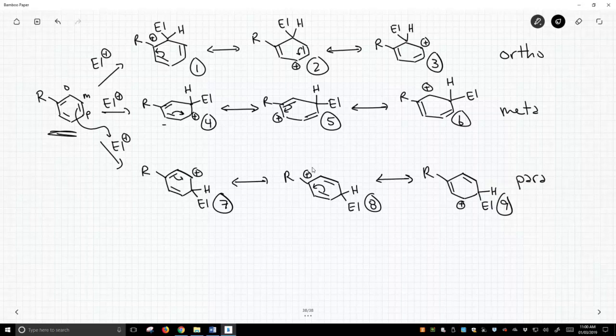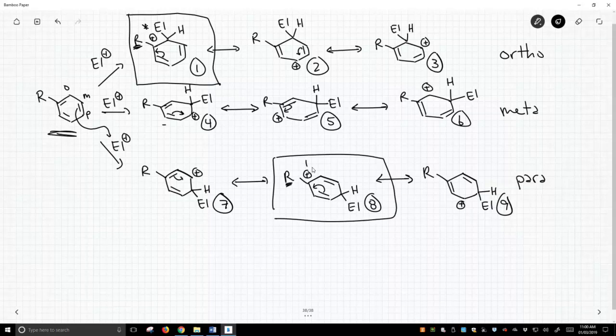As it turns out, there are two of them. Number one pops out because the R group is right next to that positive charge. So if the R group is going to exert an effect on that positive charge, for better or worse, it's resonance form number one. The other one is resonance form number eight because we have the R group right next to that positive charge. These are the two that are most important.